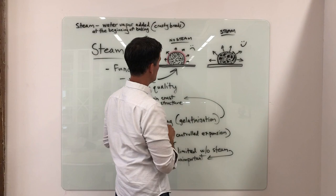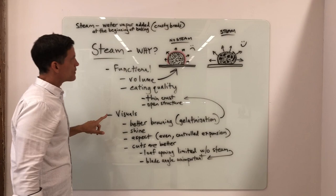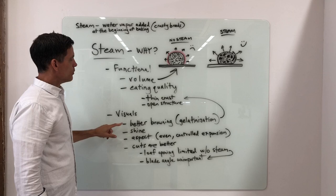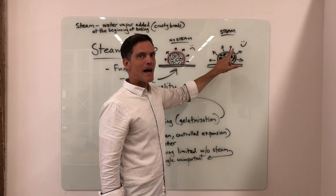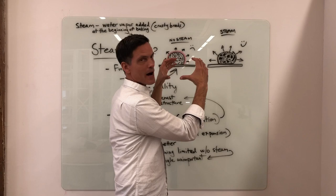Other positive outcomes from steam include visuals. We get better browning. When there's moisture on the outside of the loaf, it helps it to gelatinize. Those sugars and starches which are hydrated on the outside can brown more easily, so it looks prettier. It has a shine. The overall aspect is better.